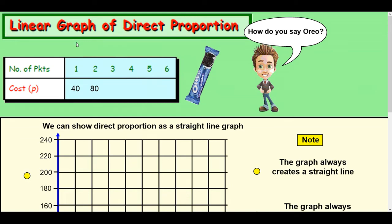Hi there, in this lesson we're going to look at direct proportion again, but we're going to relate it to graphs. Now the heading here, linear graphs of direct proportion, linear meaning straight, so it's straight line graphs of direct proportion, and I'll show you how that's created.